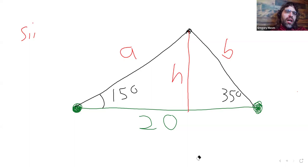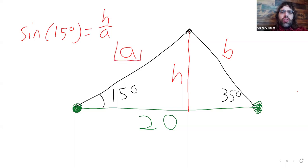The sine of 15 degrees equals h over a. So if we can use the law of sines to find a, we can then find h.